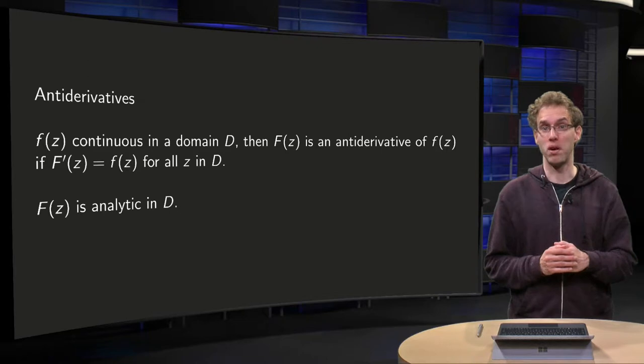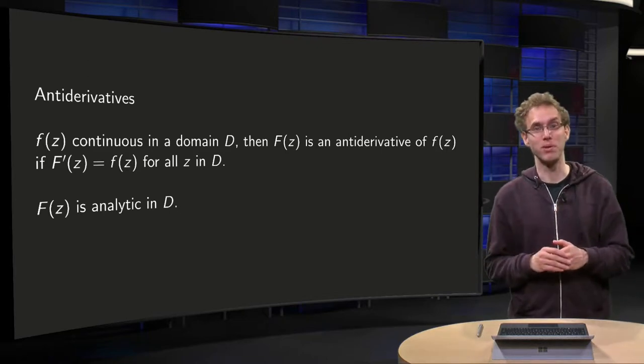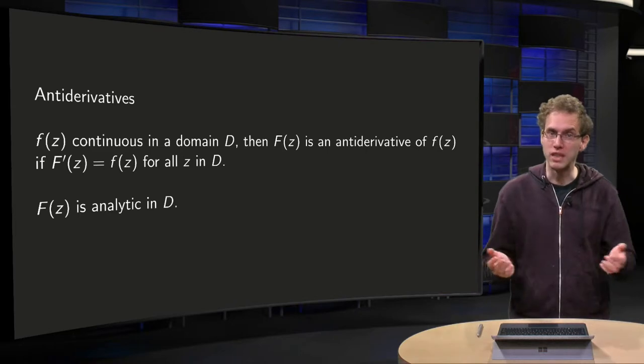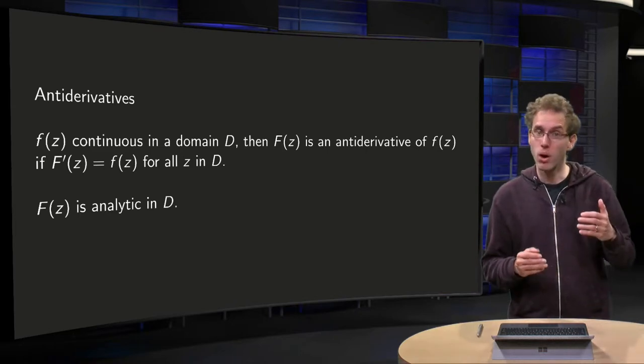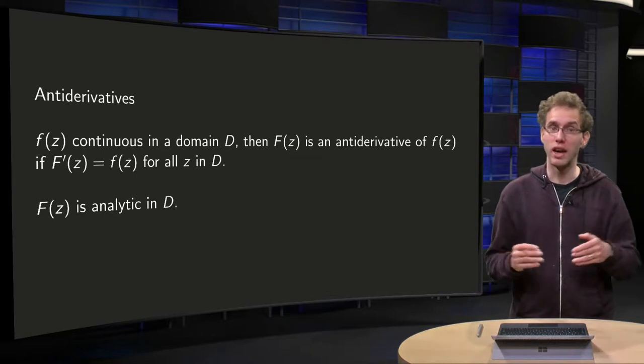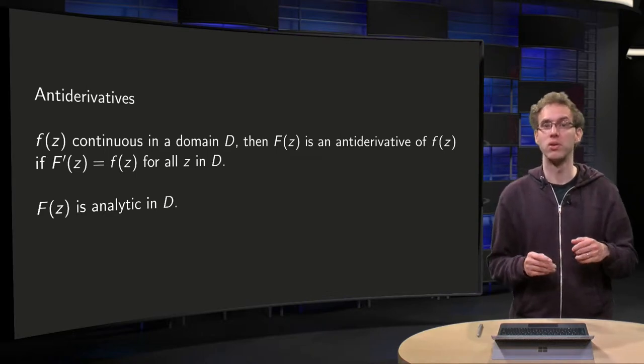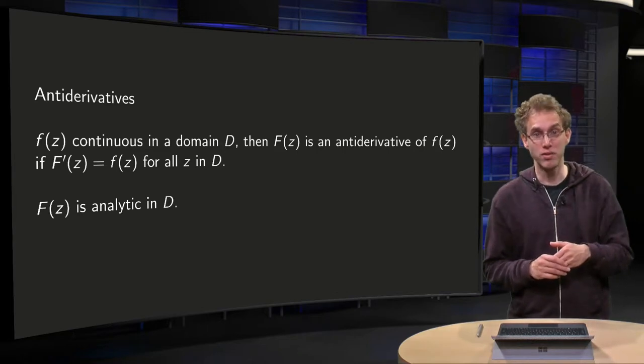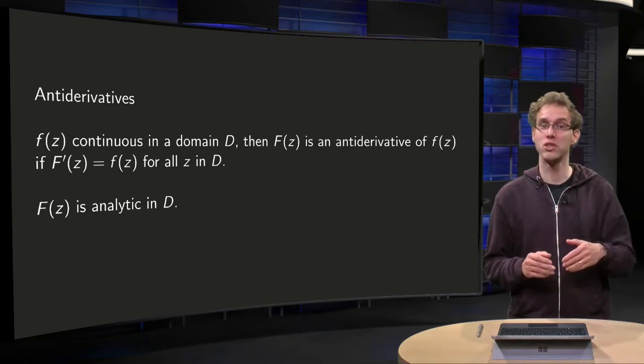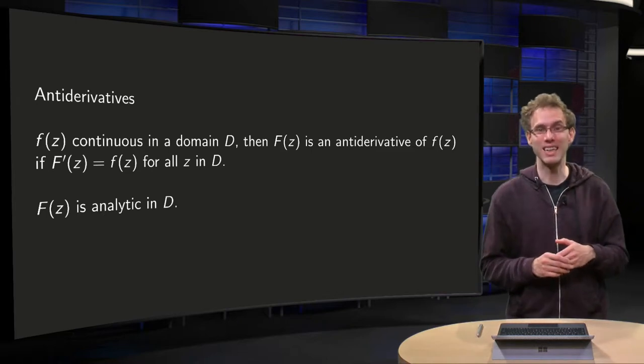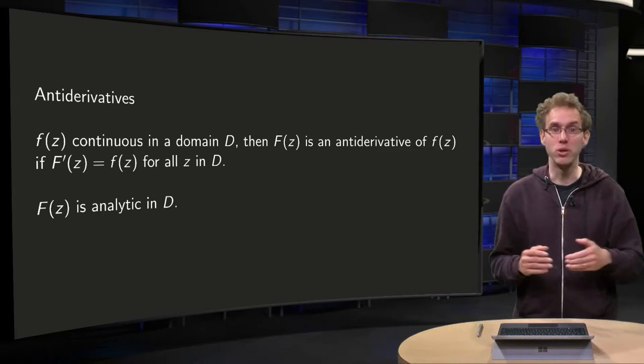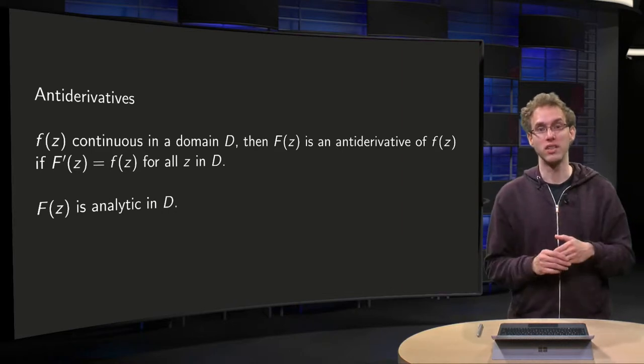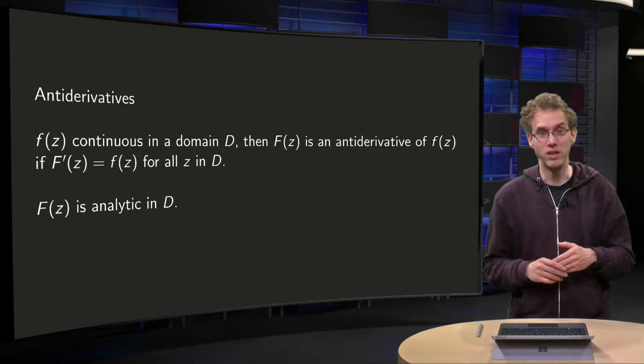Contour integrals may depend on the path, not only on the end point of the path. In some cases, though, when the path has an antiderivative, the integral only depends on the end point, and you can use this antiderivative to compute its value. So how do we do that? You know from antiderivatives from real single-variable calculus, so what does this mean in the complex setting? And how do you use it to compute the integrals in that case? That is what you will learn in this video.